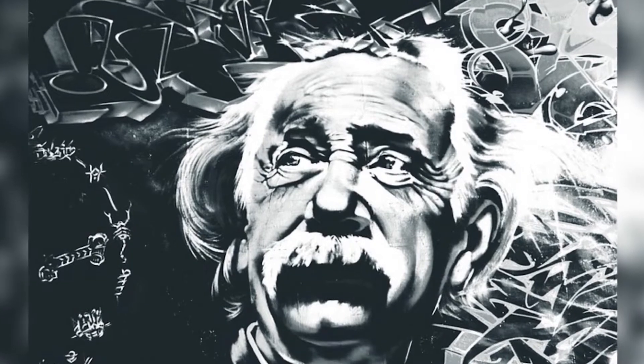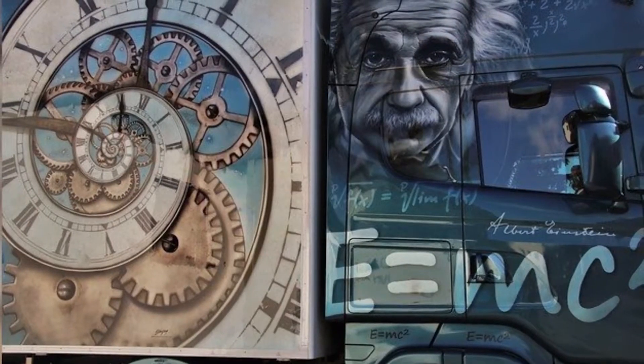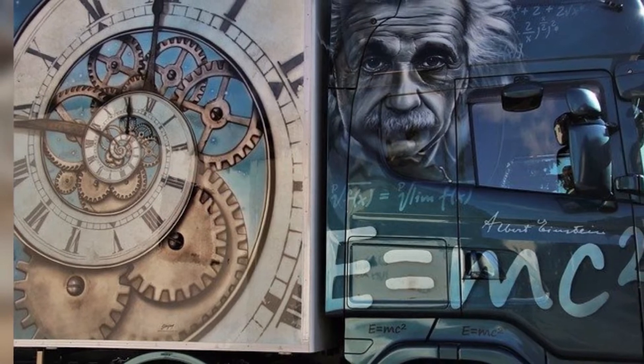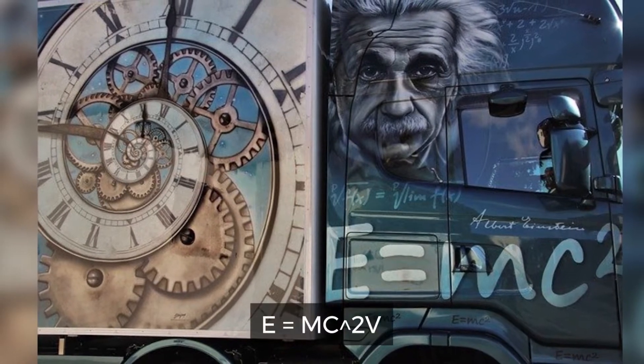It wasn't until Albert Einstein came along that we truly understood the nature of light. Einstein's theory of special relativity unified energy, matter, and the speed of light in a famous equation, E equals mc squared.